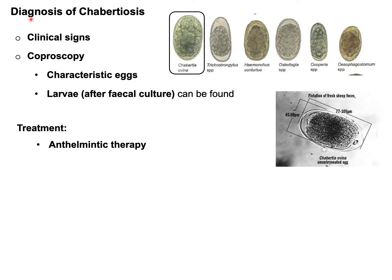For the diagnosis of Chabertia ovina infection in sheep, goat, and other ruminants, we should look for the clinical history along with the clinical signs already mentioned. For confirmatory diagnosis, we go for coproscopy — examination of feces to identify the characteristic eggs. Larval stages found after fecal culture also help in confirmatory diagnosis. For treatment of Chabertia ovina infection, different anthelmintics can be used.